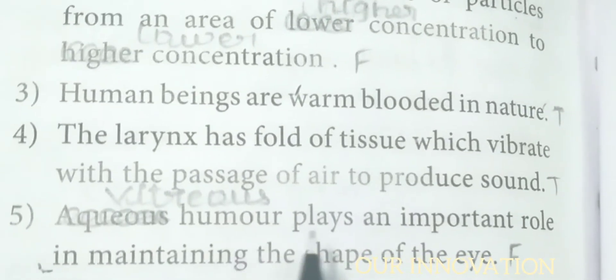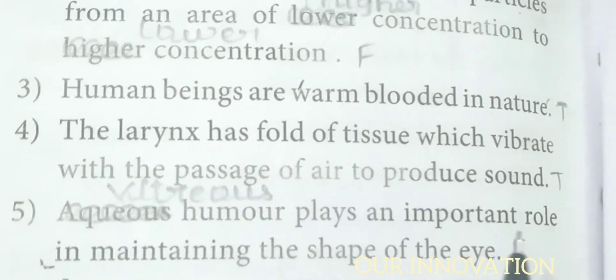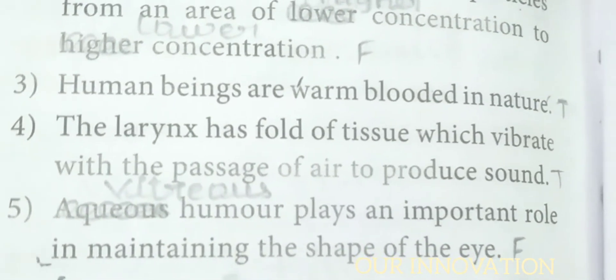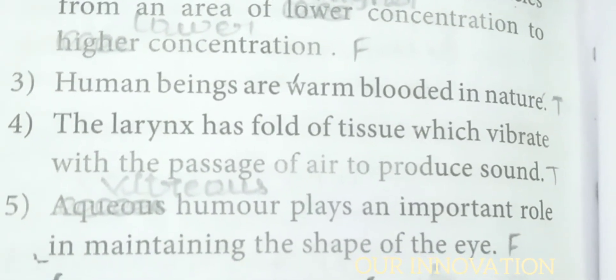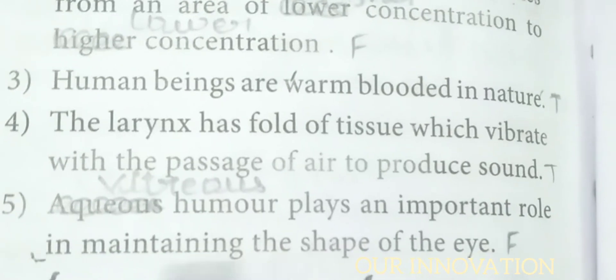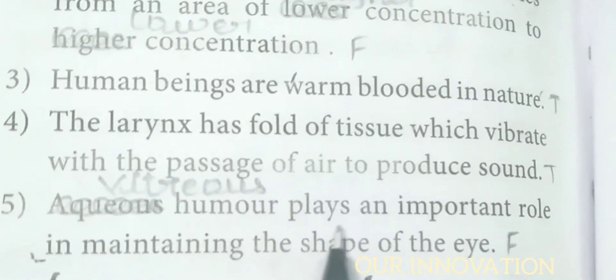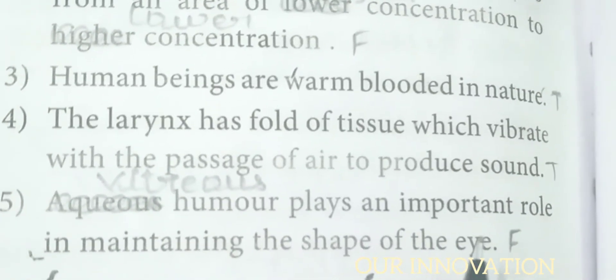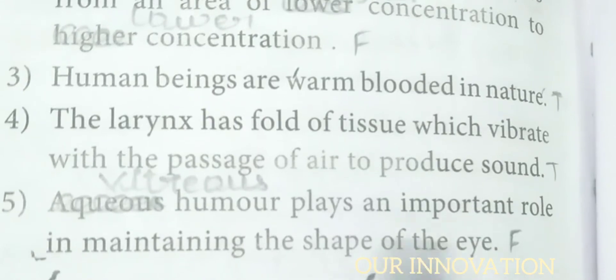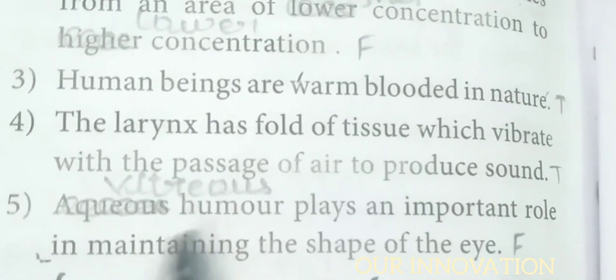Aqueous humor plays an important role in maintaining the shape of the eye — this is false. The correct statement is that vitreous humor plays an important role in maintaining the shape of the eye.